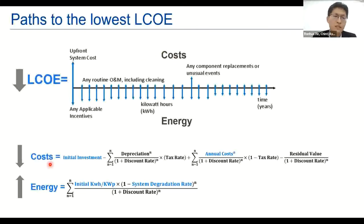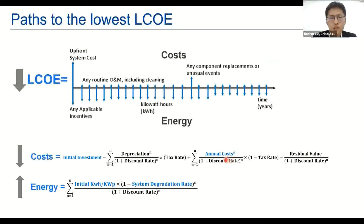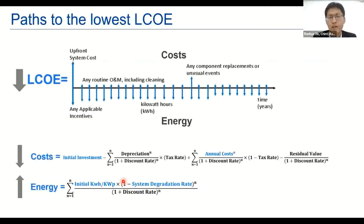There are two factors. One is cost, which has two parts: the first is initial investment, and the other is annual O&M cost. The second factor is energy. For energy, we pay attention to the first year yield and then consider the following years, where there is degradation for the system.